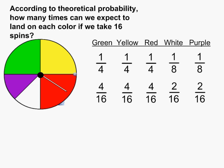The value of the fractions did not change; however, we expressed them in terms of 16 spins. So for green, yellow, and red, we could expect to land on each one of those colors four times out of 16. And for white and purple, we can expect to land on those colors two times out of 16.